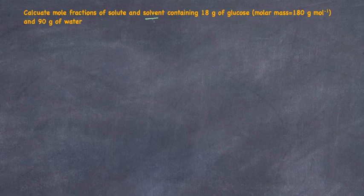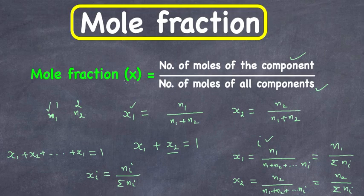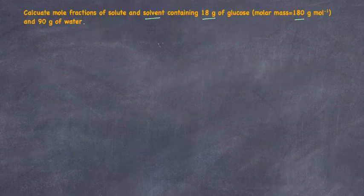The problem: calculate the mole fraction of solute and solvent in a solution that contains 18 grams of glucose — molar mass of glucose is 180 grams per mole — and 90 grams of water. So we're going to calculate the mole fraction of glucose and water. Since mole fraction depends on number of moles, but we're given mass, we first need to convert mass into number of moles.